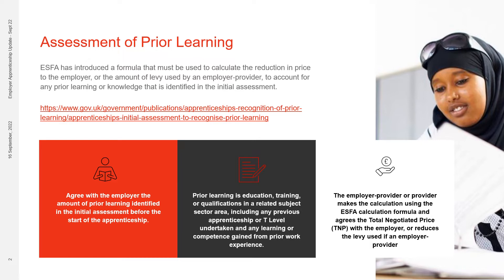A new formula has been introduced and must be used to calculate the reduction in total negotiated price that is charged to the employer for each apprenticeship. If you are an employer provider, you would apply this reduction to the amount of levy you claim for each apprentice via your apprenticeship service account.